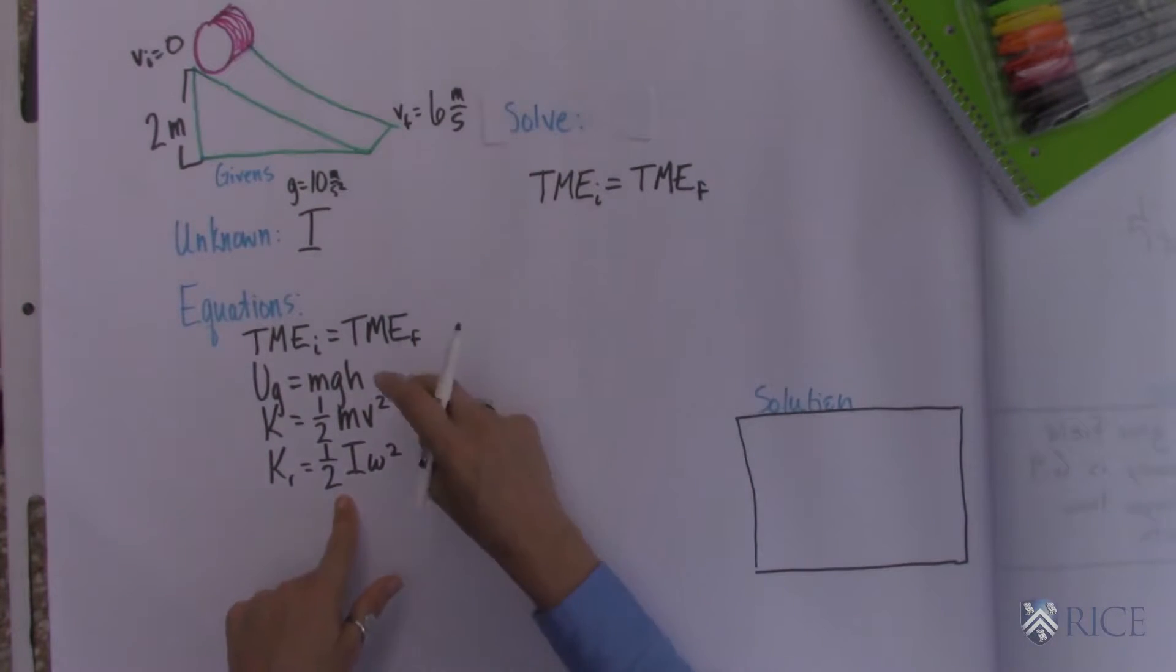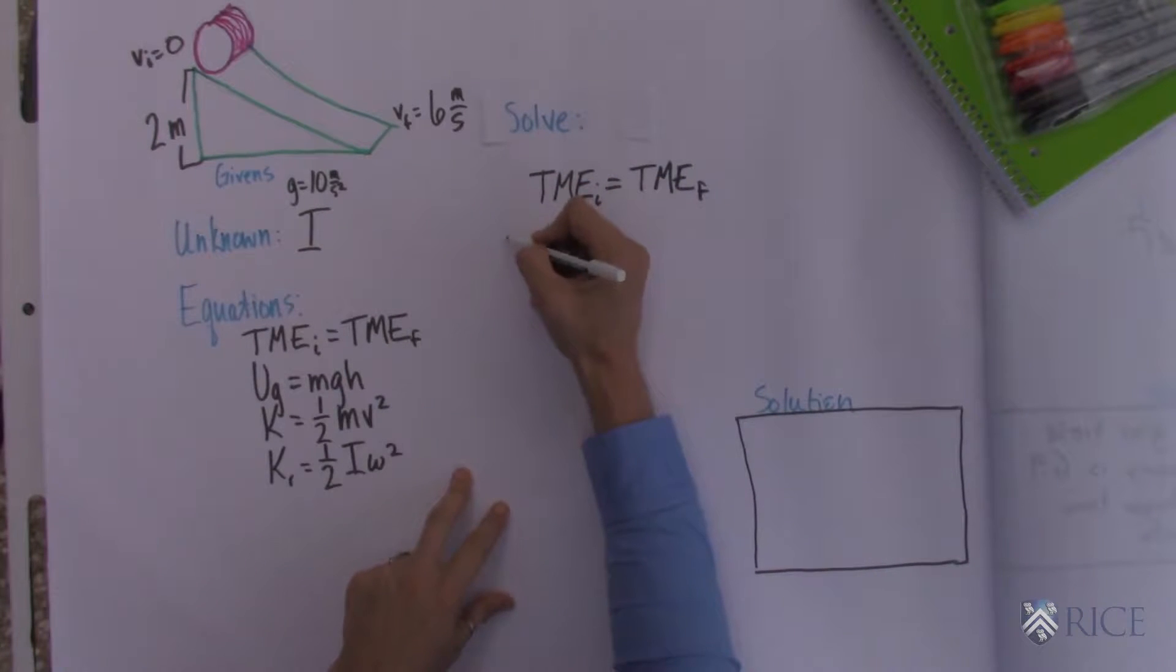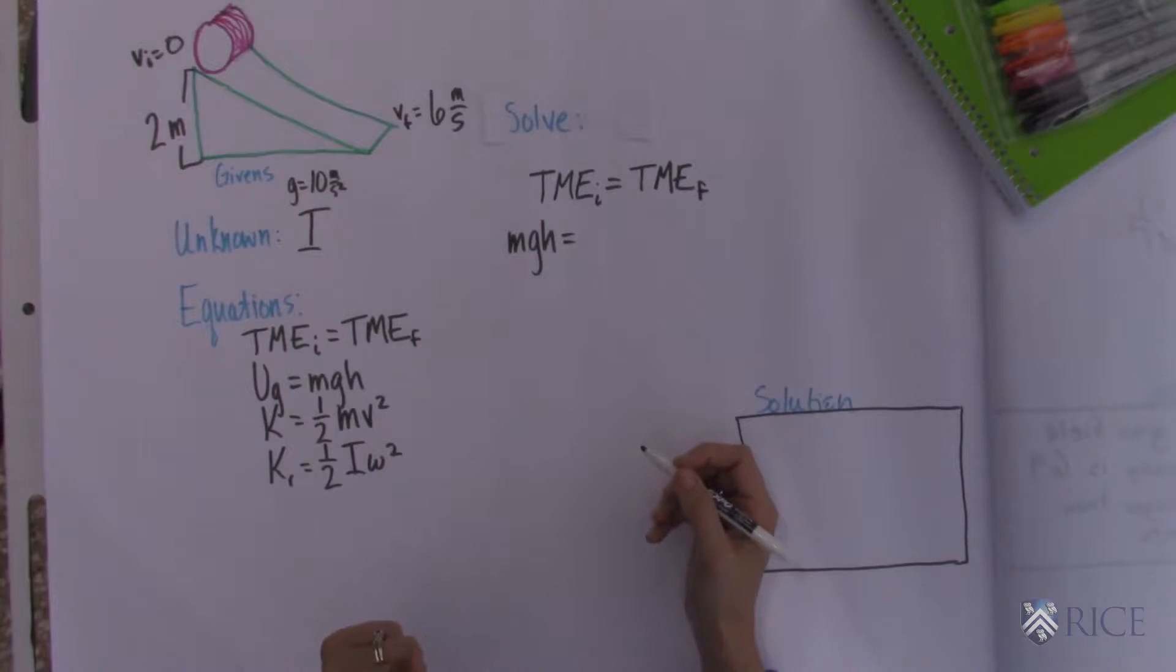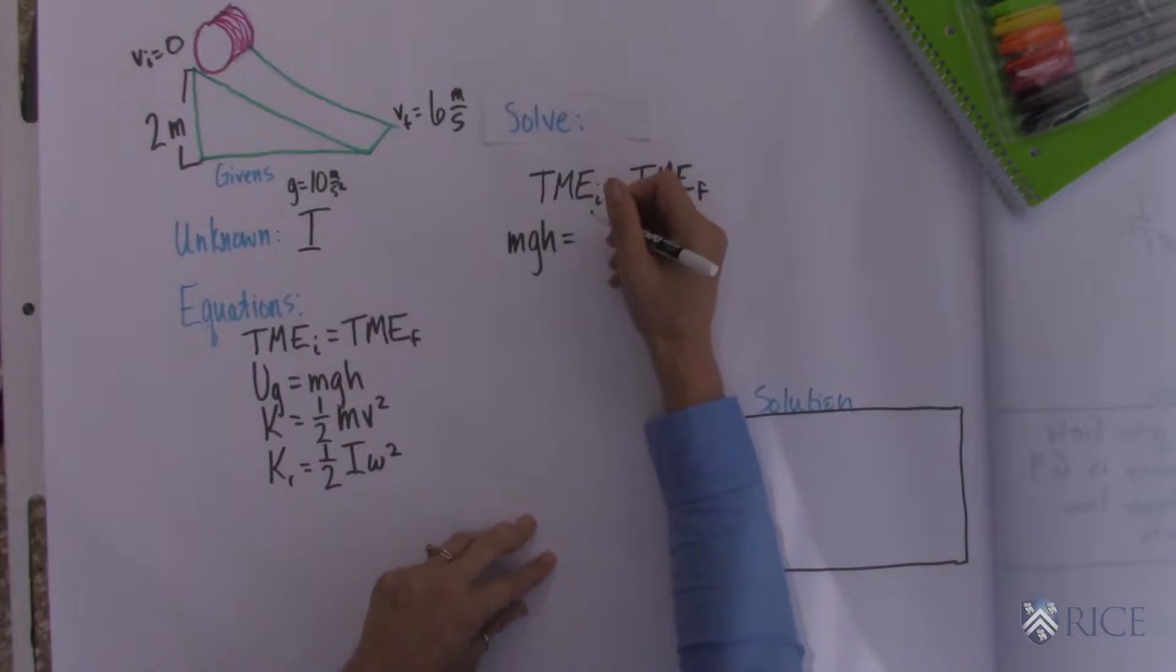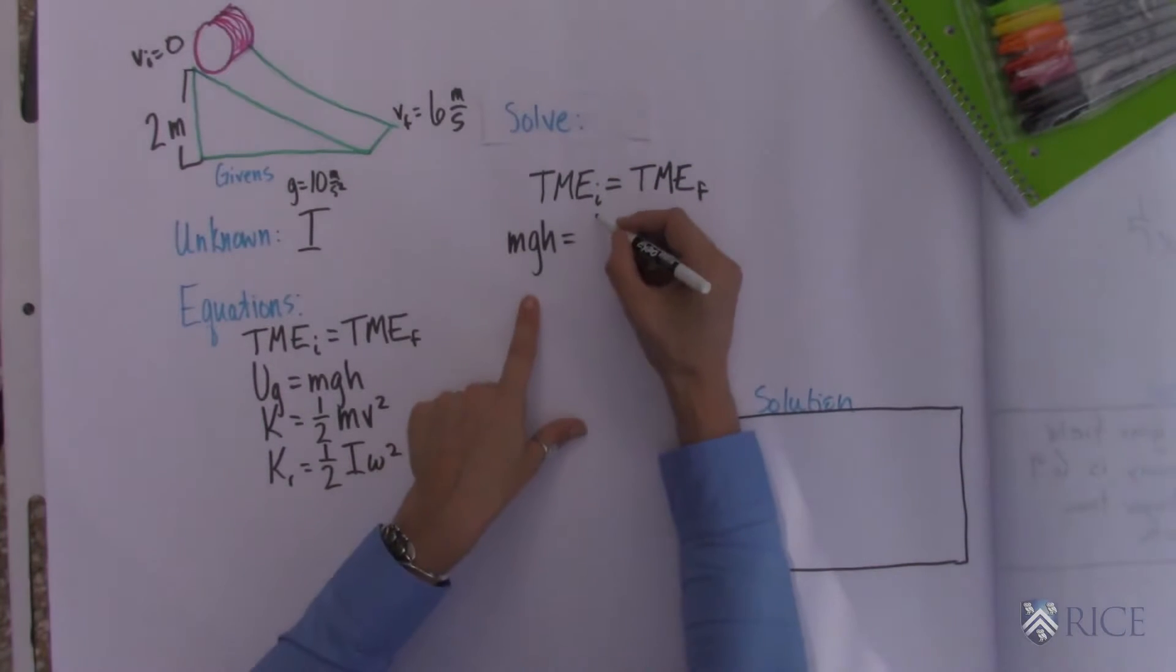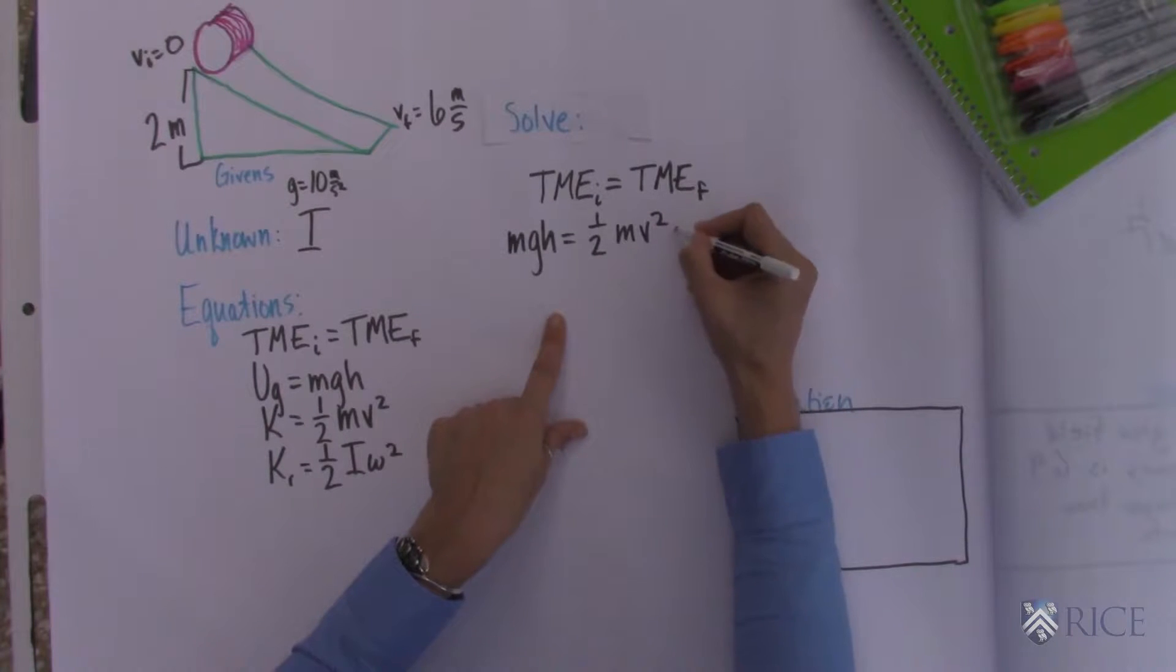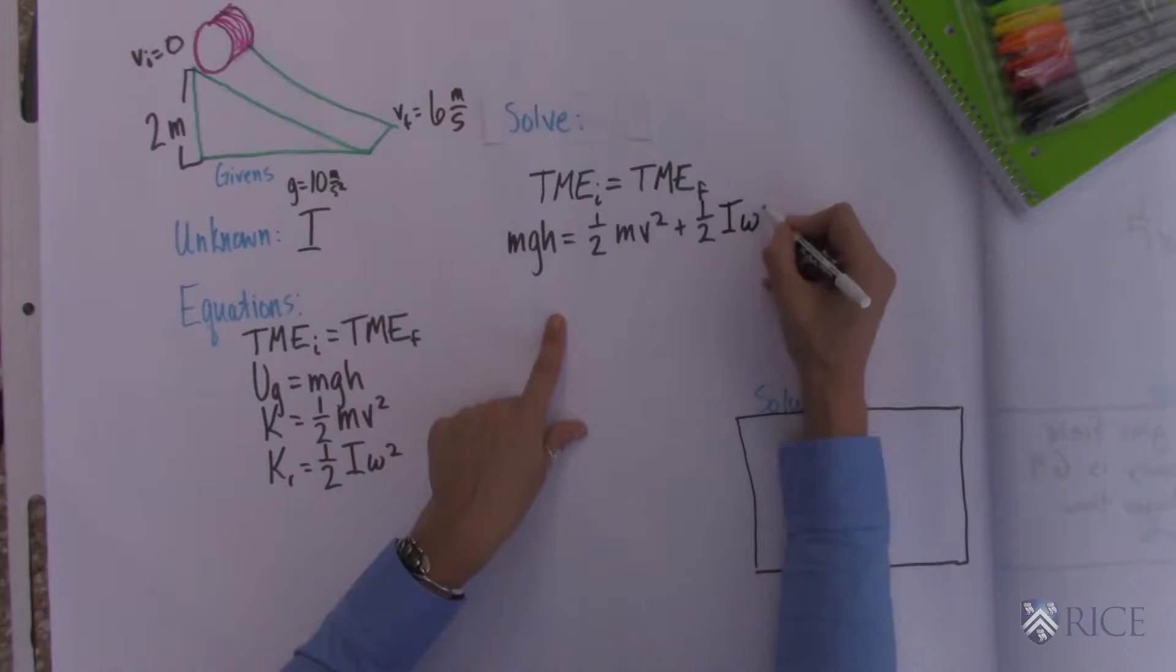So we start off with only gravitational potential energy. And we finish with both rolling and kinetic. So then we get, initially, it's mgh. And at the end, it's 1 half mv squared plus 1 half i omega squared.